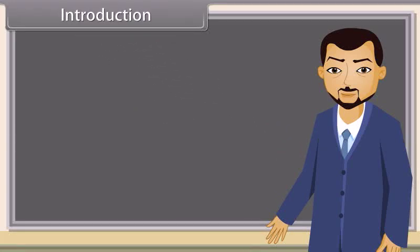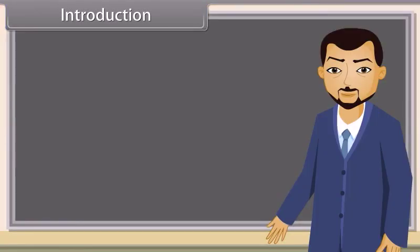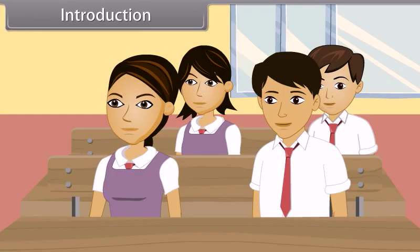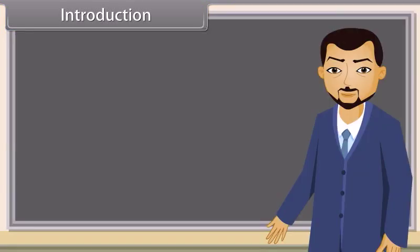Arun, how much you scored in science last year? Teacher, 72. And how much in maths? Teacher, 84. 72 in science and 84 in maths.